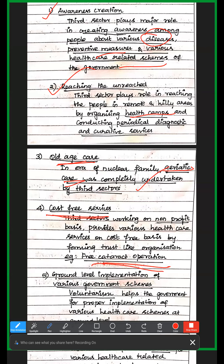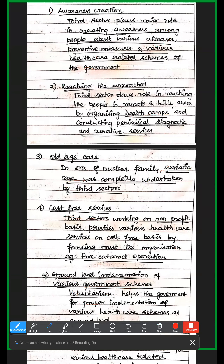Next is ground-level implementation of various government schemes. The third sector plays a voluntary role in bringing government schemes to the ground level. For example, schemes like Ayushman Bharat are implemented at the primary health center level through third sector involvement.